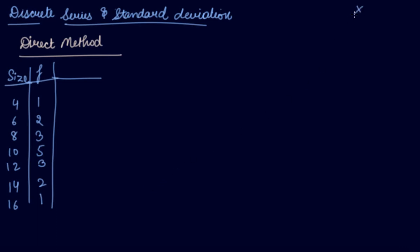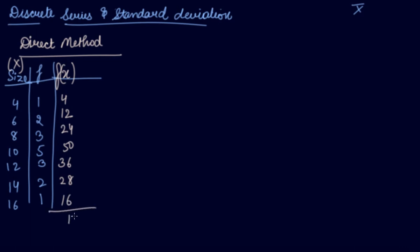In the direct method, we take the deviation from the mean. So let's find out the mean first. This is your x and this is your frequency. We find the mean by fx — multiplying frequency with the x series. We get 4, 12, 24, 50, 36, 28, and 16. Adding these gives 170. Mean = Σfx / Σf = 170 / 17 = 10.